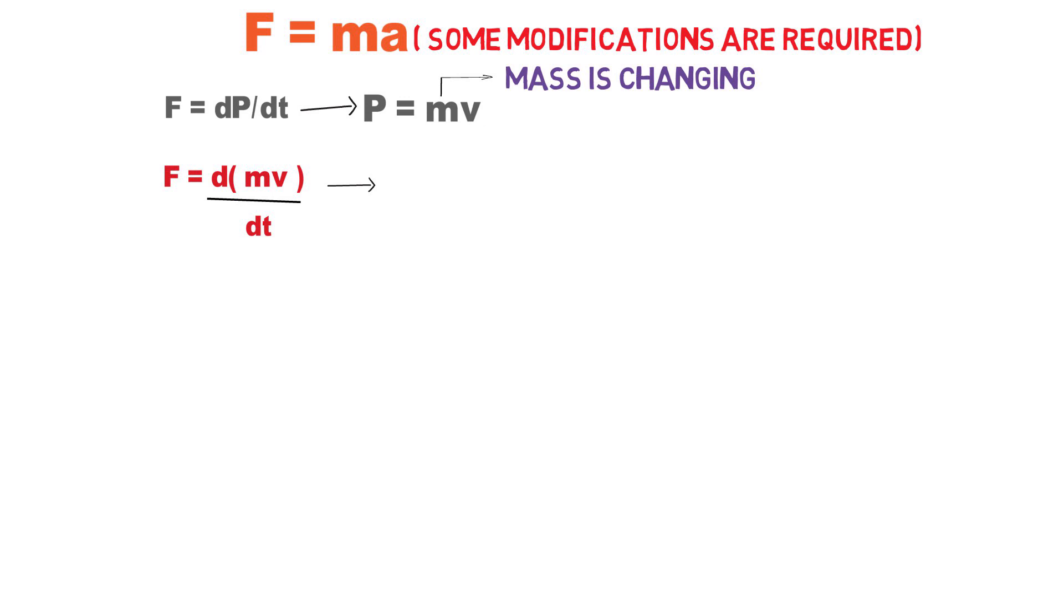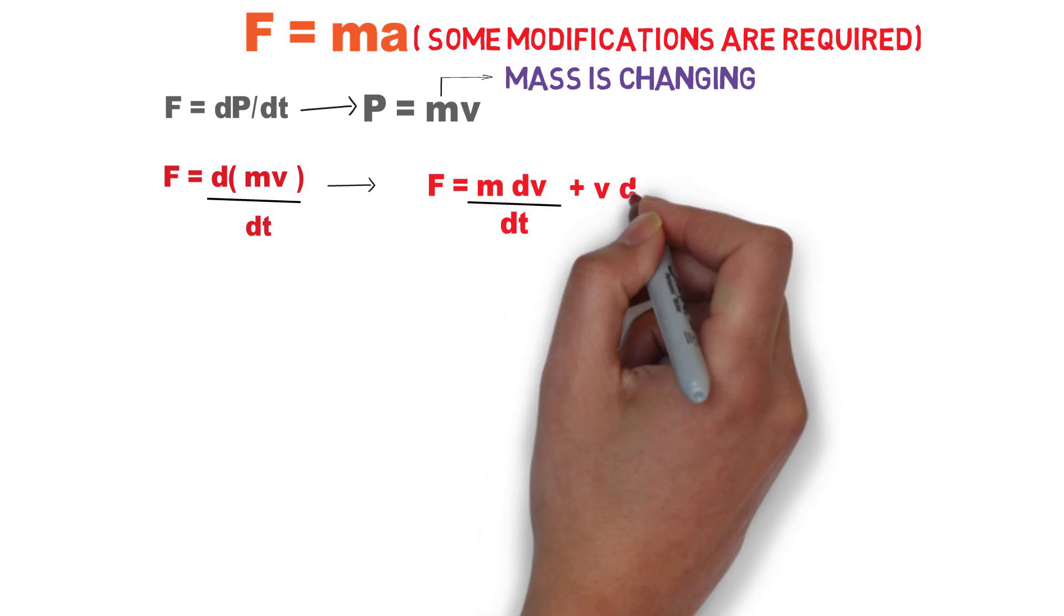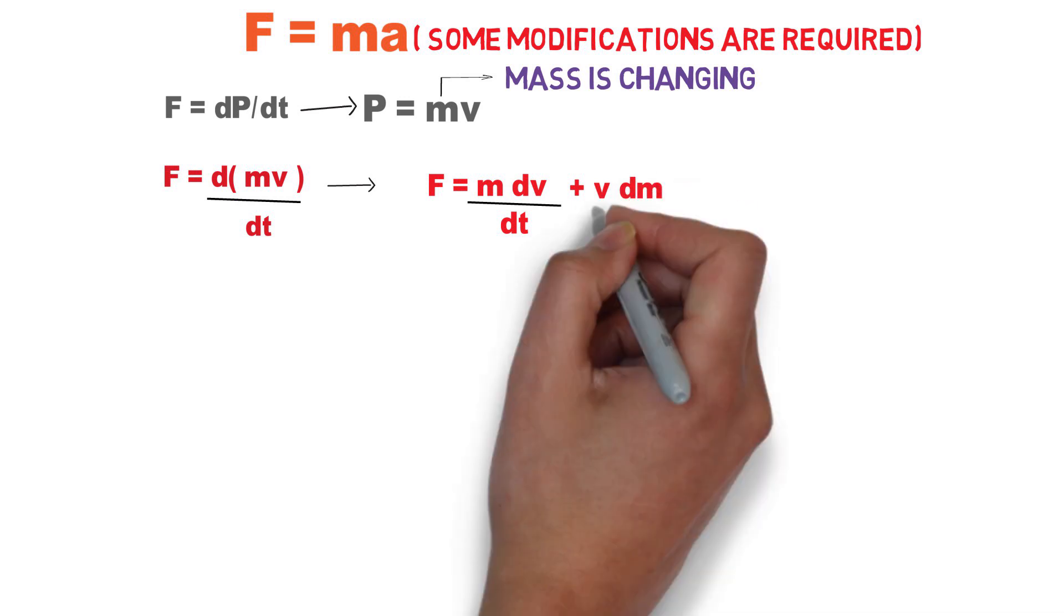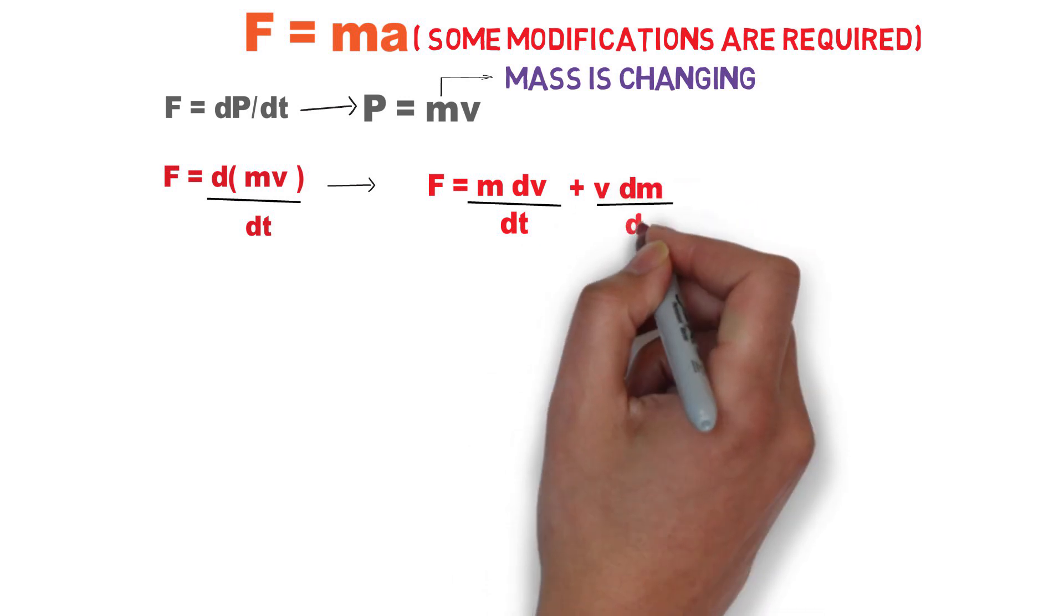So the force is then equal to the mass multiplied by the change in velocity divided by the change in time, plus velocity multiplied by the change in mass divided by the change in time.